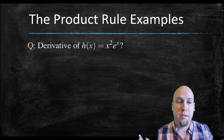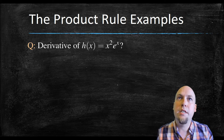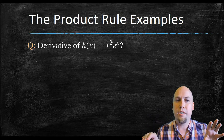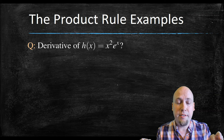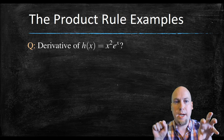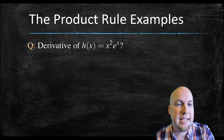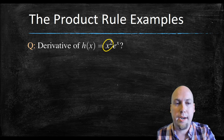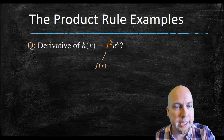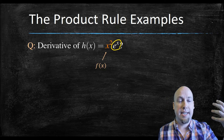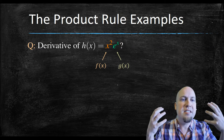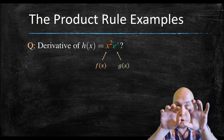Let's look at our first example: x squared times e to the x. You've got to look at that function and ask how can I break it down into a product of two functions whose derivatives I individually know? I want this to be of the form f(x) times g(x). I know how to take the derivative of x squared, so let's make that f of x. The other part, e to the x, I'll call g of x — the derivative of e to the x is just itself.